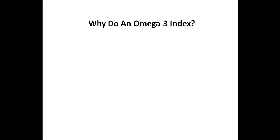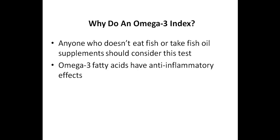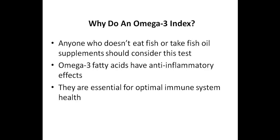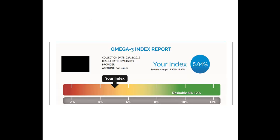The seventh blood test marker you should consider testing is an omega-3 index. I usually include it as an optional test, although anyone who doesn't eat fish or take fish oil supplements might want to consider doing this test. The reason for this is because healthy levels of omega-3 fatty acids have anti-inflammatory effects, and they are essential for optimal immune system health. I personally have ordered a full fatty acid profile myself, and this is something you can consider as well. I'll include a link in the description below to the lab I used for a full fatty acid profile, although you also have an option of just doing an omega-3 index alone. The optimal reference range for the omega-3 index is 8% to 12%. In this sample, the person's omega-3 index is close to 5%, which is well below the optimal range of 8% to 12%.